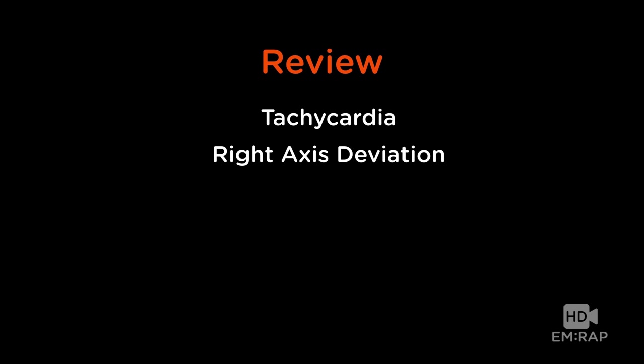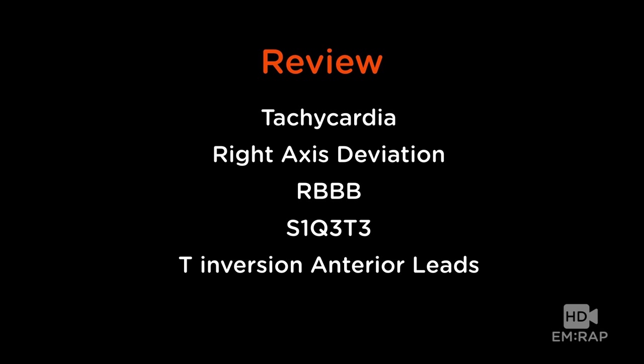So what we covered: tachycardia and nonspecific EKG findings; a normal EKG can be consistent with PE; right axis deviation is obviously very important and goes together with right bundle branch block — under strain the electrical axis changes and the QRS widens, giving the RSR pattern in V1, V2, V3; S1Q3T3 is basically the same thing, not very specific or helpful. T-wave inversion in the anterior leads is very important because it's easy to misdiagnose as ischemia when it could be a big PE. And ST elevation in aVR is a poor prognostic finding in both cardiac ischemia and PE.